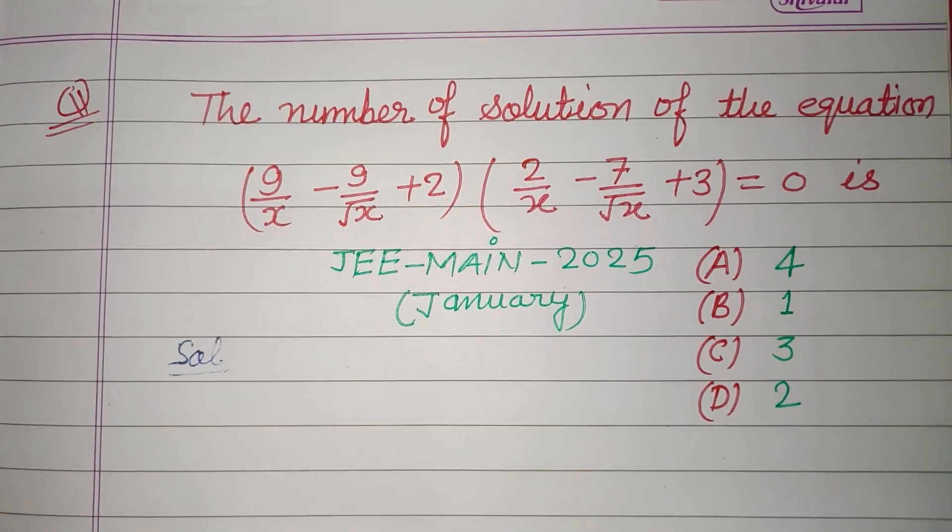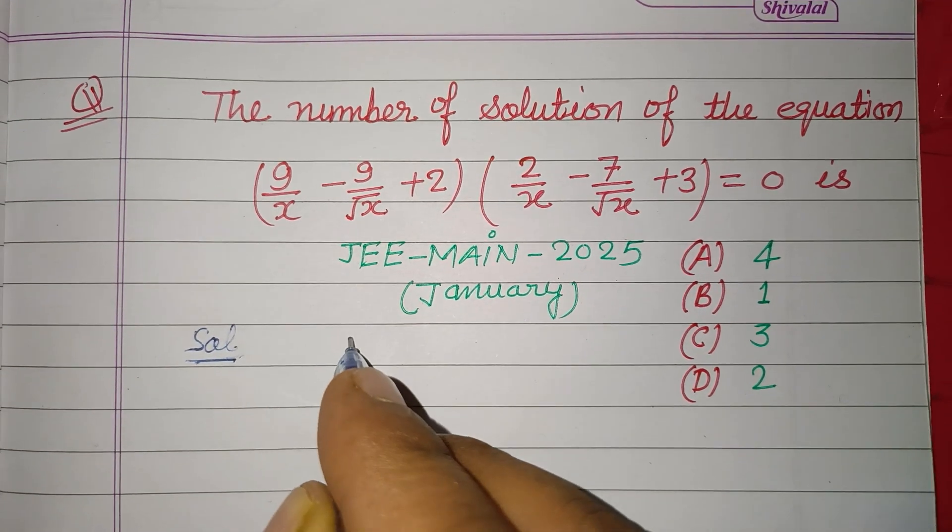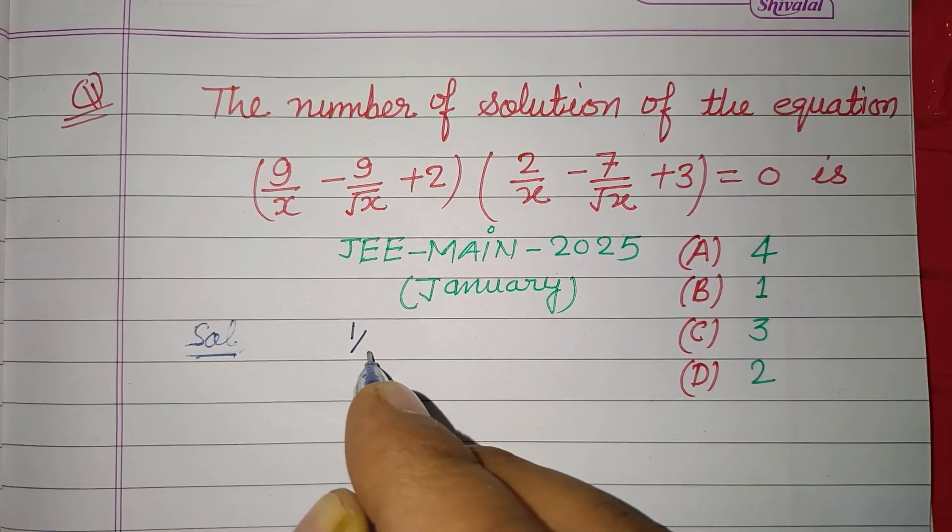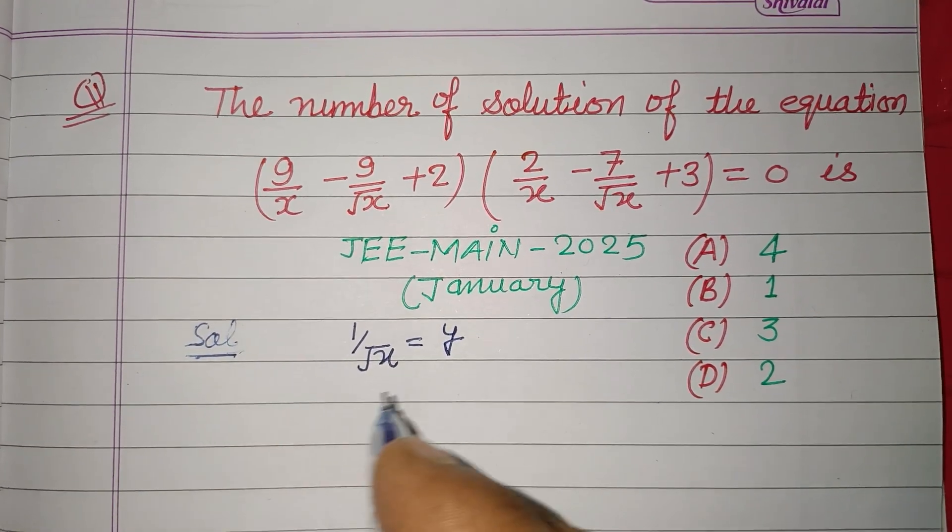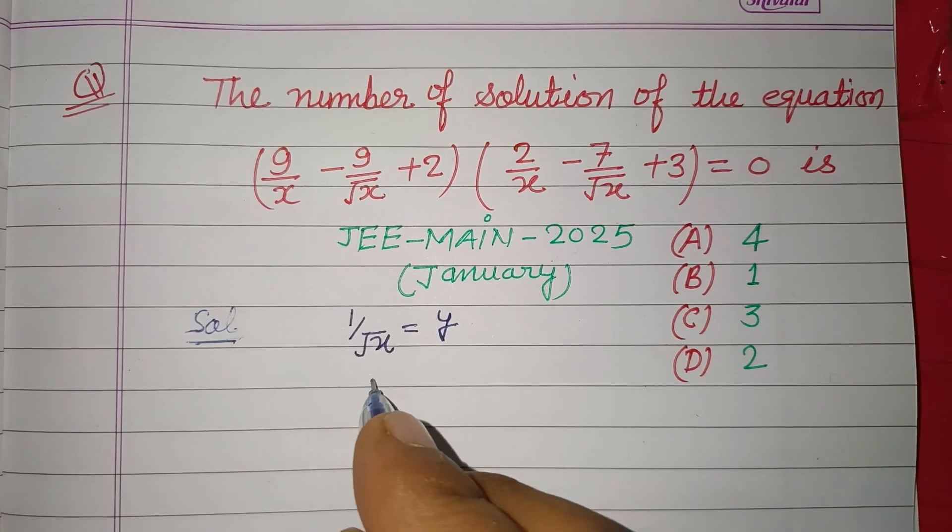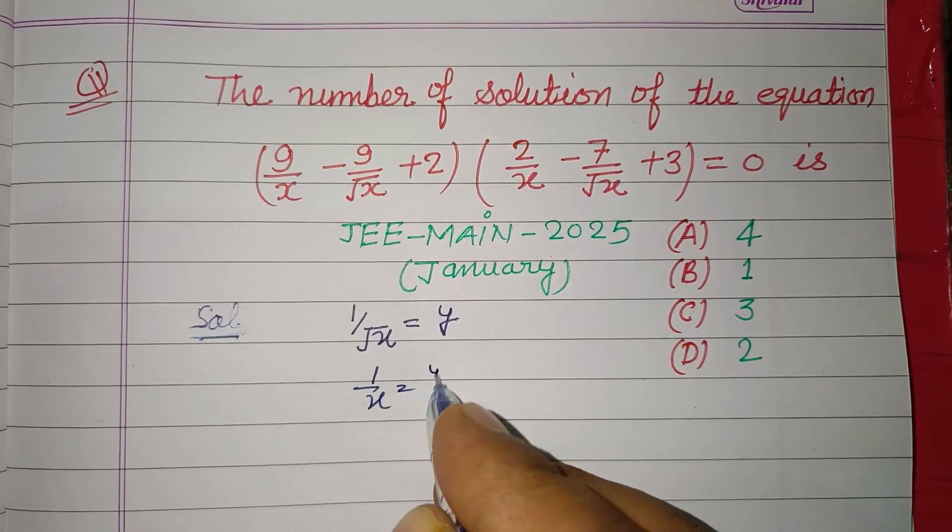Here we take 1/√x as y in this question. Now squaring, we get 1/x = y², or x = 1/y².